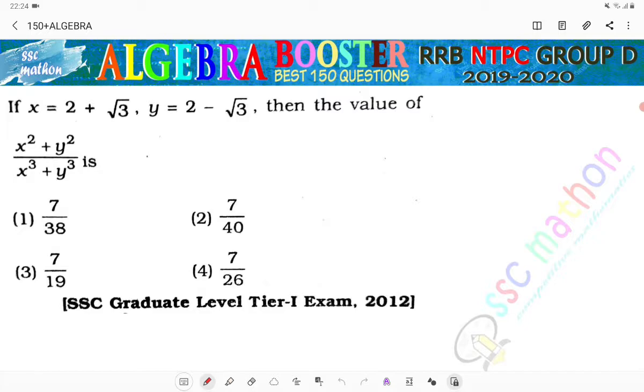If x equals 2 plus root 3 and y equals 2 minus root 3, then the value of x square plus y square by x cube plus y cube.